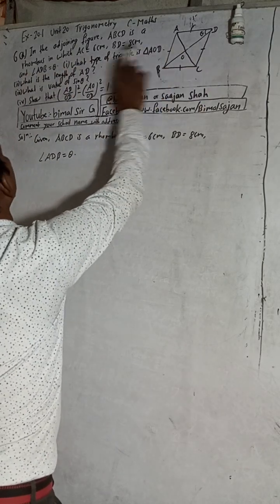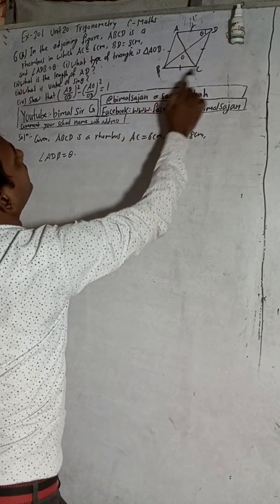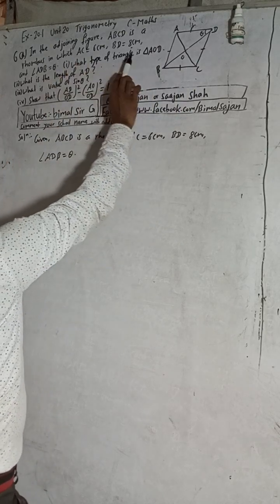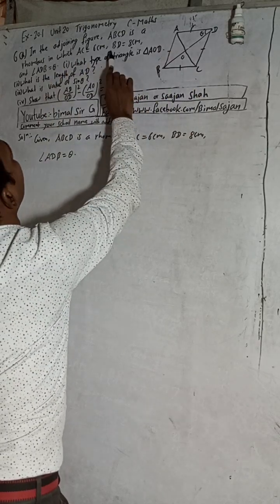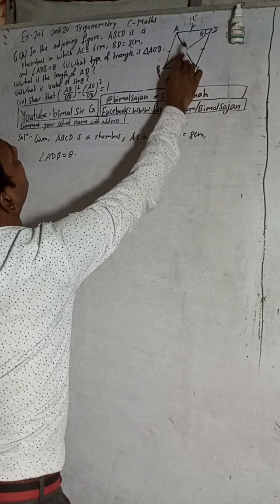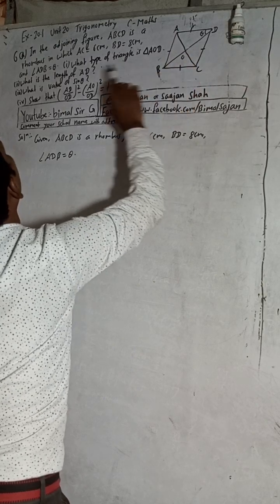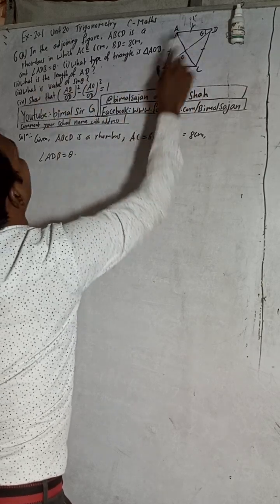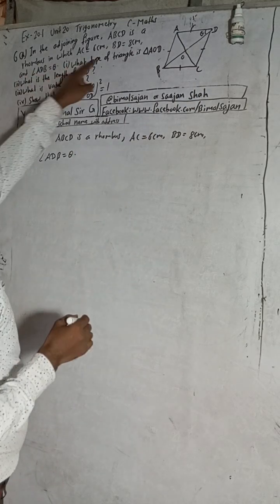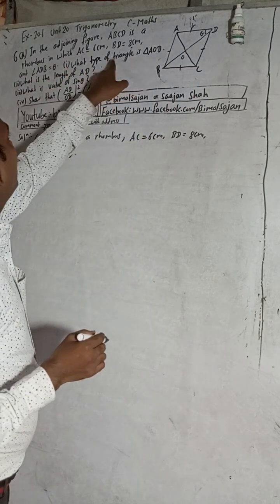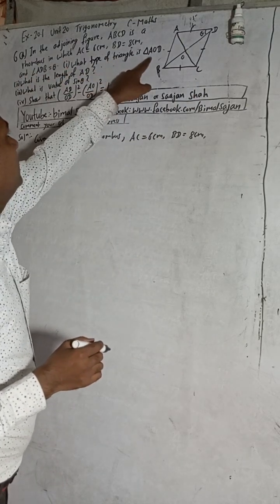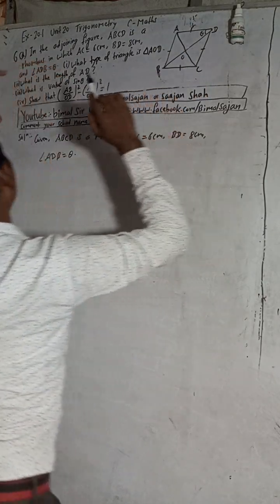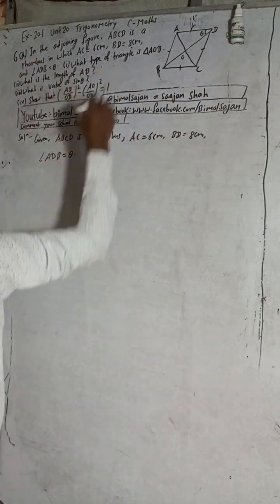Now let me start the solution. The question is 6a. In the figure, ABCD is a rhombus in which AC is equal to 6 cm and BD is equal to 8 cm, and angle ADB is called theta. Number one: what type of triangle is triangle AOD?